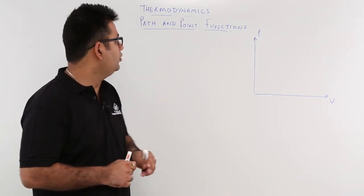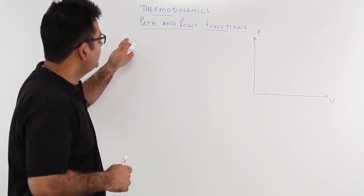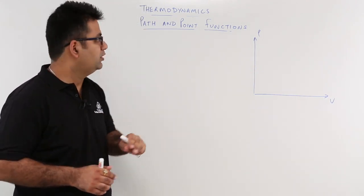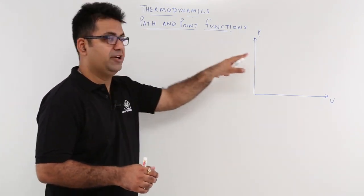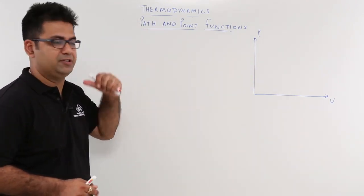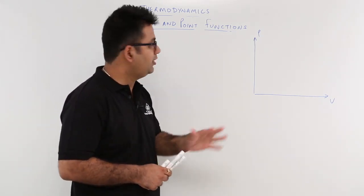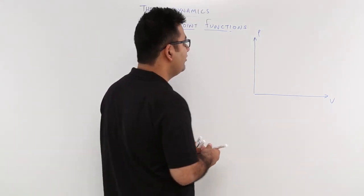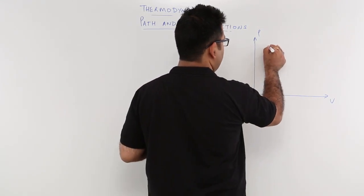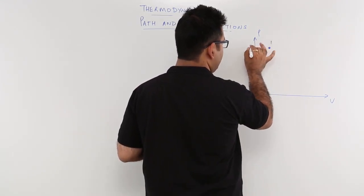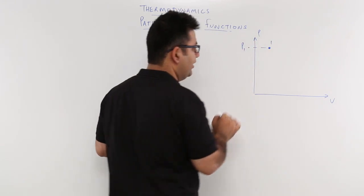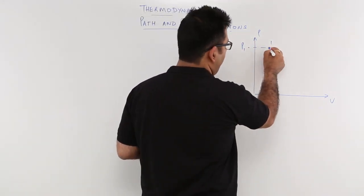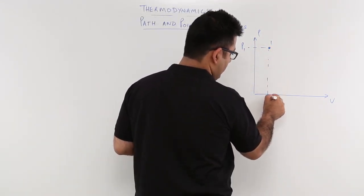In this video let us talk about path and point functions. Let us talk about point functions first and then we will come to path functions. For that I have drawn a PV plot. So let us have state 1 over here, and for state 1 we have state variable P1 and the other state variable V1.